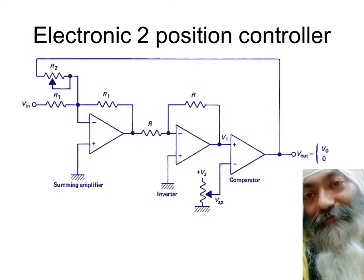In this session we shall be going for electronic two-position controller. Two-position controller means that the output is either 0 or maximum V0 as you may call it. In case of op-amps it is normally VCC taken as equal to 5V.